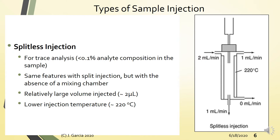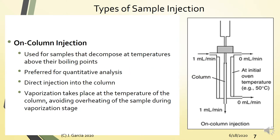To summarize: split injection is for more concentrated samples, while splitless injection is for trace analysis with lower analyte concentrations. The third type is on-column injection, used for thermally labile samples that decompose at temperatures above their boiling points. Here, the sample is injected directly into the column where the temperature equals the column oven temperature, so vaporization occurs at the column temperature, avoiding overheating during vaporization.